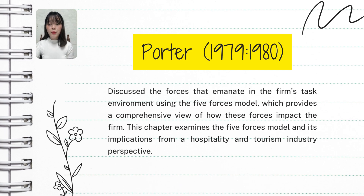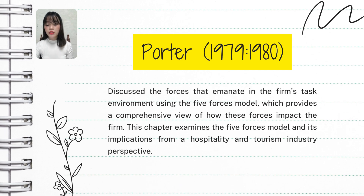The third force is the bargaining power of suppliers. This refers to the power of suppliers — like food vendors for restaurants or linen suppliers for hotels. If there are only a few suppliers, they can charge higher prices or dictate terms, which impacts the profitability of businesses in the hospitality industry. On the other hand, if there are many suppliers, businesses can shop around for better deals.